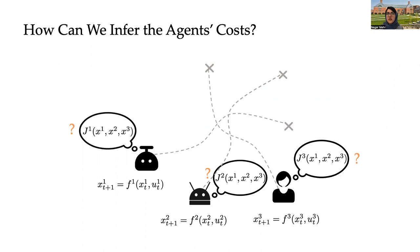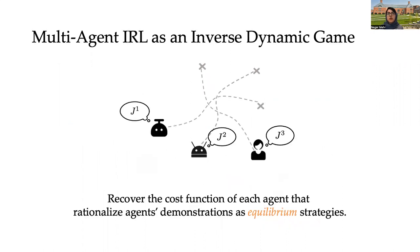And our cost inference problem really becomes an instance of an inverse dynamic game problem, where we try to learn and recover agents' cost functions such that the demonstrator trajectories become equilibria under the learned cost parameters.